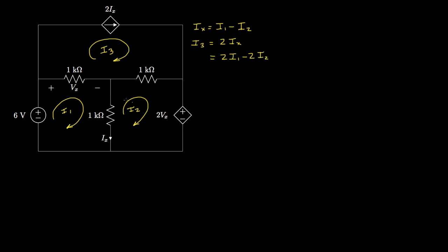What we're doing is working through the circuit to relate all unknown voltages and currents on which dependent sources depend to the mesh currents we've defined. So Ix is I1 minus I2, and I3 is 2·Ix, which equals 2I1 minus 2I2. This means mesh current I3 depends on I1 and I2, so if we can determine those two, we'll know I3.